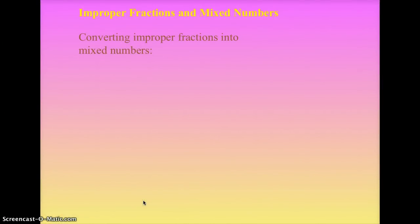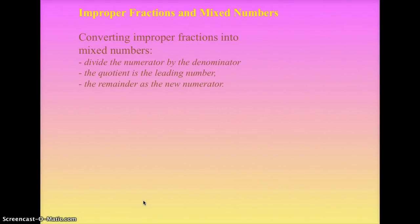First of all, improper fractions and mixed numbers. Converting improper fractions into mixed numbers. So first you divide the numerator by the denominator. So remember the top one by the bottom one. The quotient is the leading number, and the remainder is the new numerator. So leading number as in it is the whole number, which makes plenty of sense considering the top part is how many pieces that there are, and the bottom part tells you how many make a whole. So that fraction bar means out of. So you're trying to figure out, well, how many can I get out of?